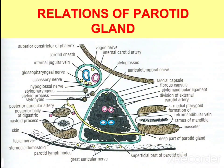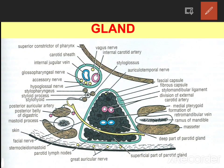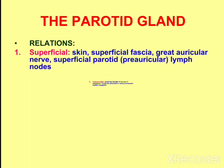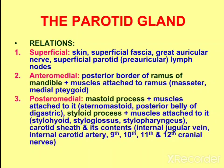Here we can see the capsules of the parotid gland in the diagram. This is the parotid gland and this is the capsule surrounding it. The superficial relations of the parotid gland include the skin, superficial fascia, great auricular nerve, and superficial parotid lymph nodes.